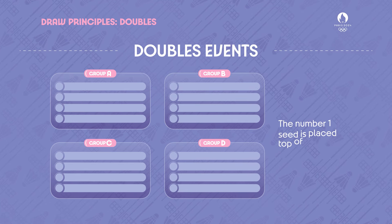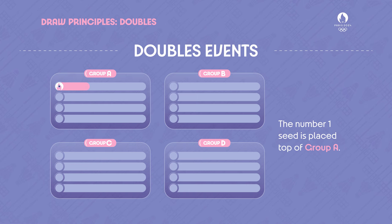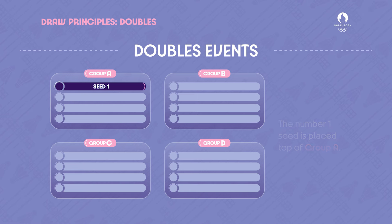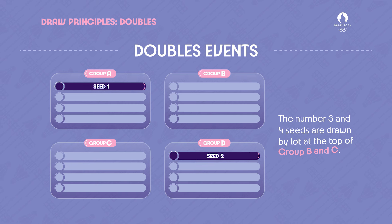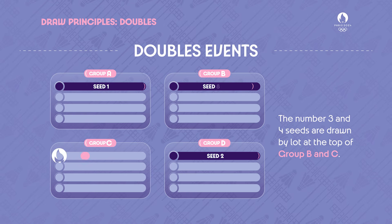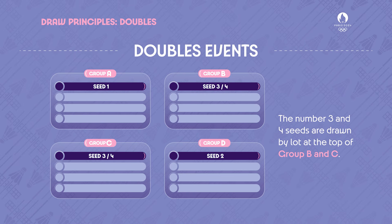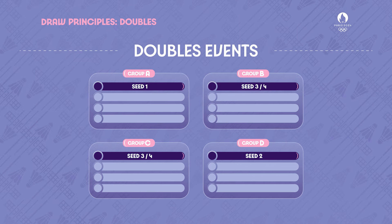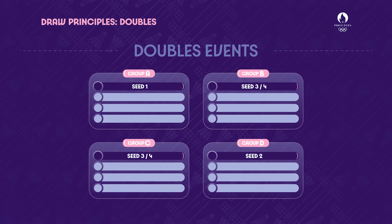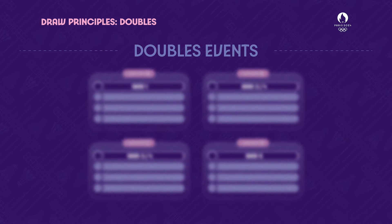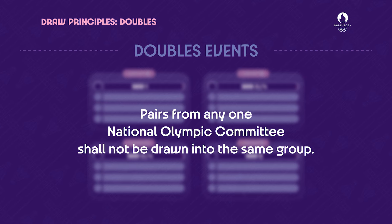The number one seed is placed top of Group A, the number two seed is placed top of Group D. The number three and four seeds are drawn by lot at the top of Group B and C, in accordance with BWF statute section 5.4.1.2, clause 4.1.